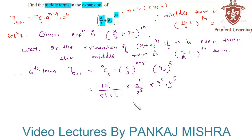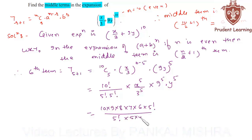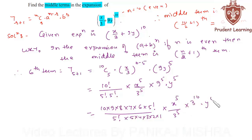Expanding: 10! = 10 × 9 × 8 × 7 × 6 × 5! over 5! × 5!, and 5! = 5 × 4 × 3 × 2 × 1. Also, 9^5 can be written as 3^10, giving us x^5 / 3^5 · 3^10 · y^5.